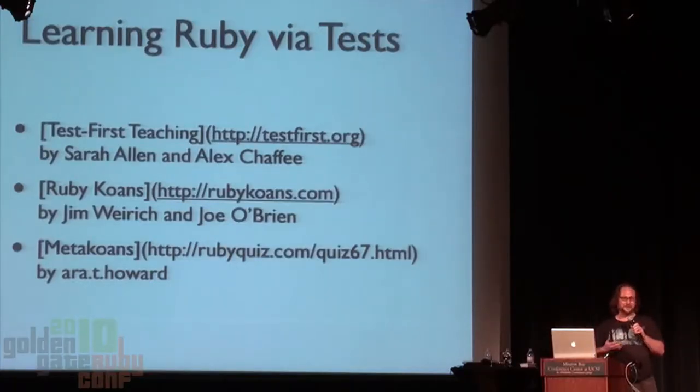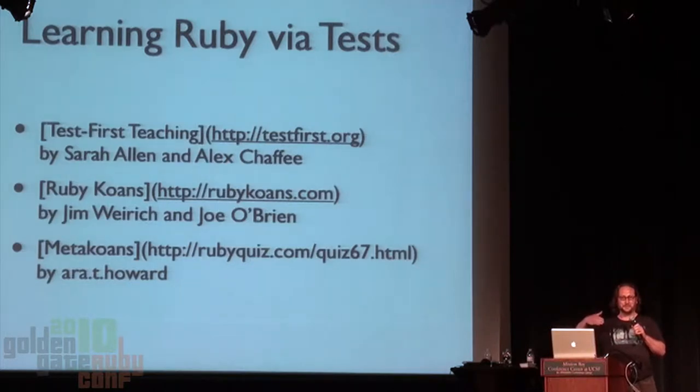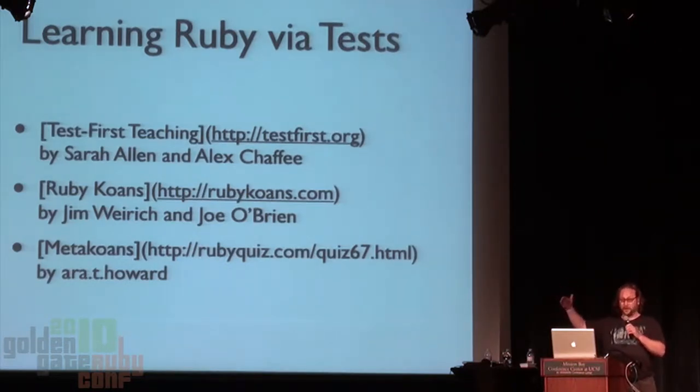Just to give you a brief overview of the materials: test-first teaching is what Sarah and I have done — it's Ruby, it's micro-tests, and it's at a relatively high conceptual level where we let the students bite off a little bit more than just learning a single syntactic feature of the language. Ruby Koans is at the other extreme, very much about learning incremental tiny things about the language. I'm going to show you code examples and go into more detail about both of those styles.